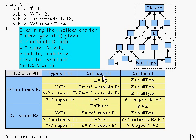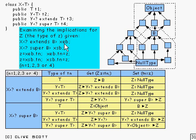Let's have a look at what we've got here. This is the get case where we've got Z and we're setting it to TN, where N is 1 to 4 corresponding to these things over here. We have two particular cases to look at: X of something which extends B, and X of something which is super B. Because it's setting Z, the type of Z has got to be a supertype of whatever TN is. If TN is T, and T is something which extends B,